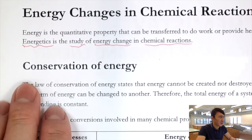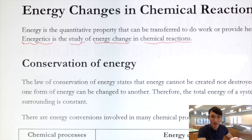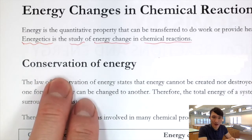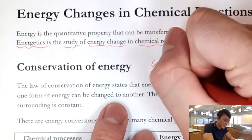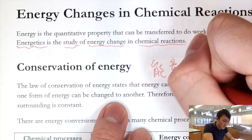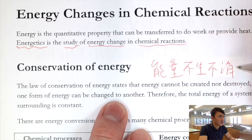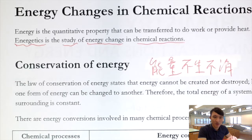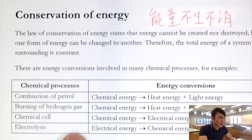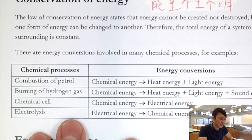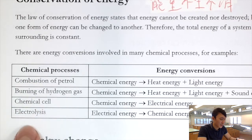Here we have a basic principle you must know before we move ahead: the conservation of energy. Basically, energy cannot be created nor destroyed. The only thing you can do is change the form of energy — energy conversions. In chemistry, we need to know some energy conversions in typical processes such as combustion of petrol or in a chemical cell.